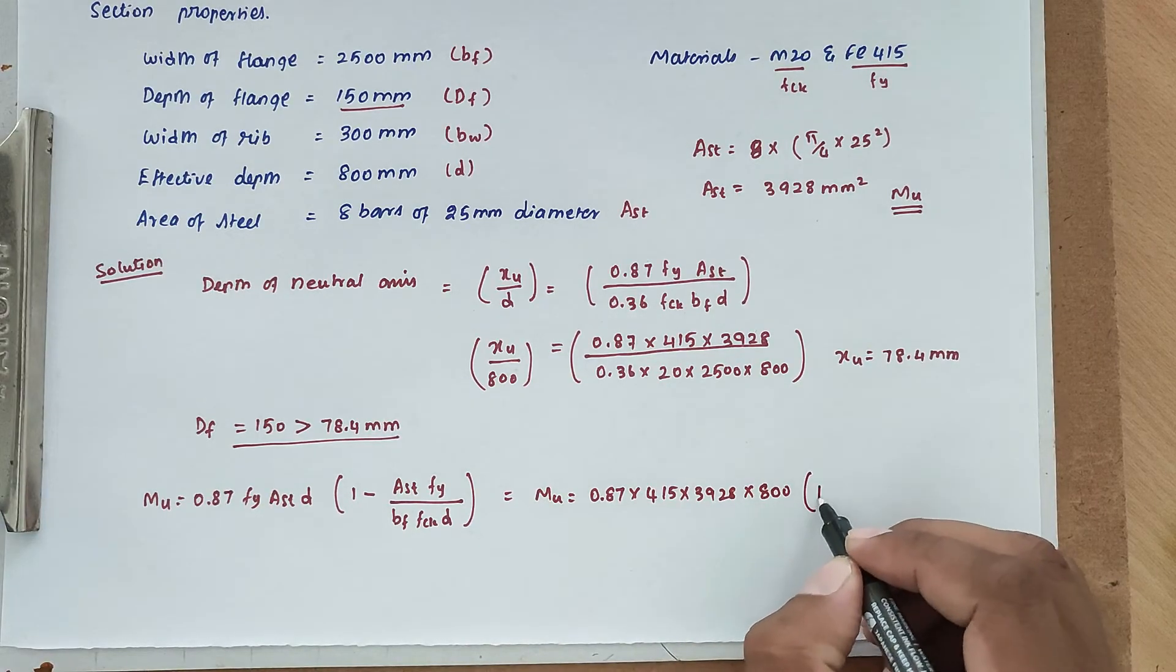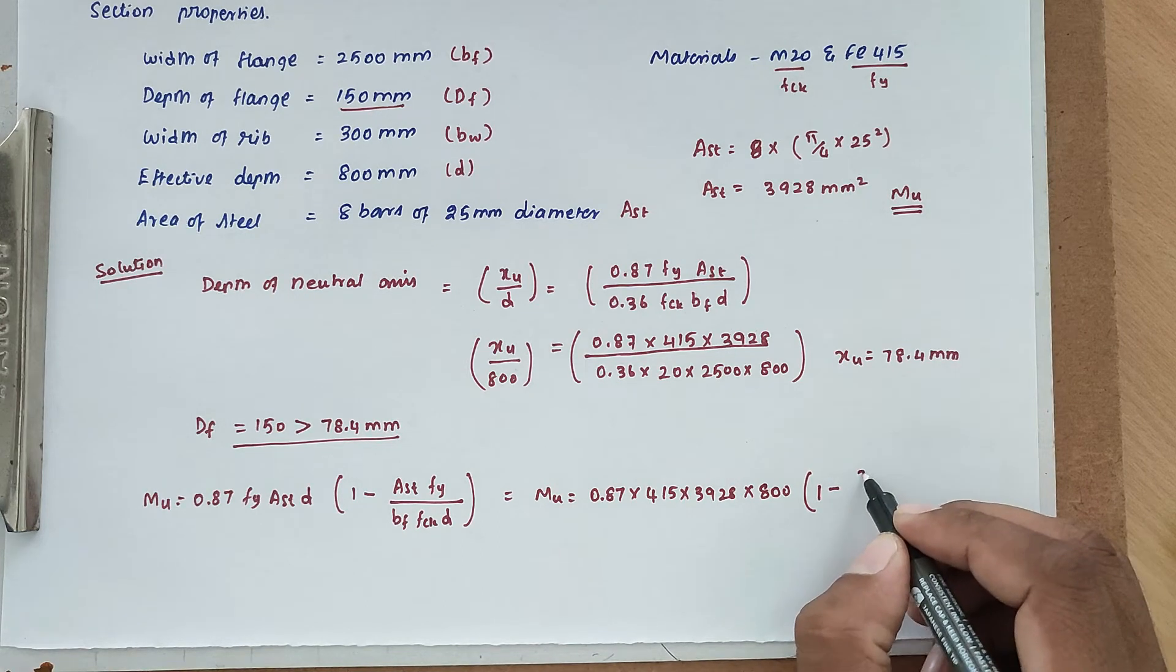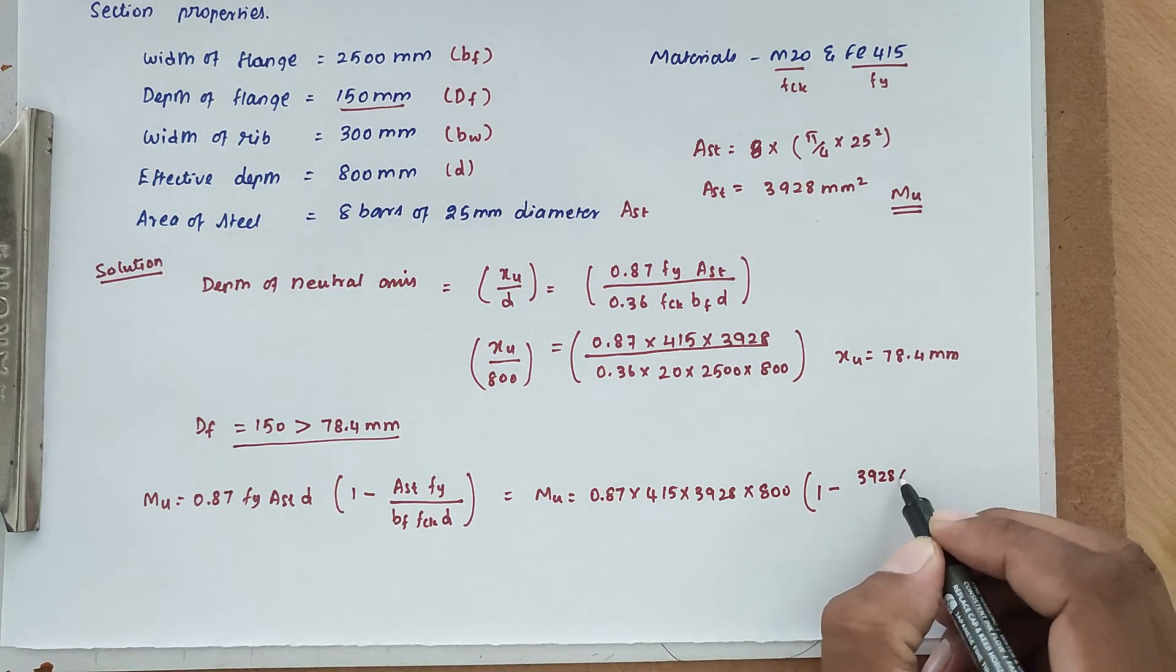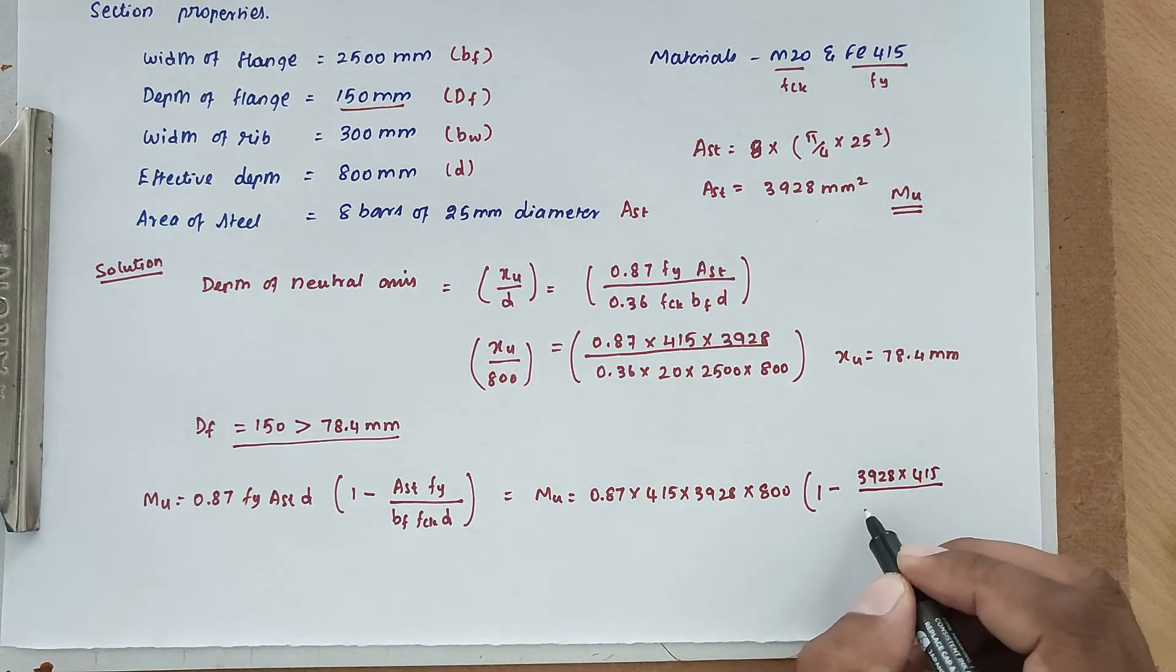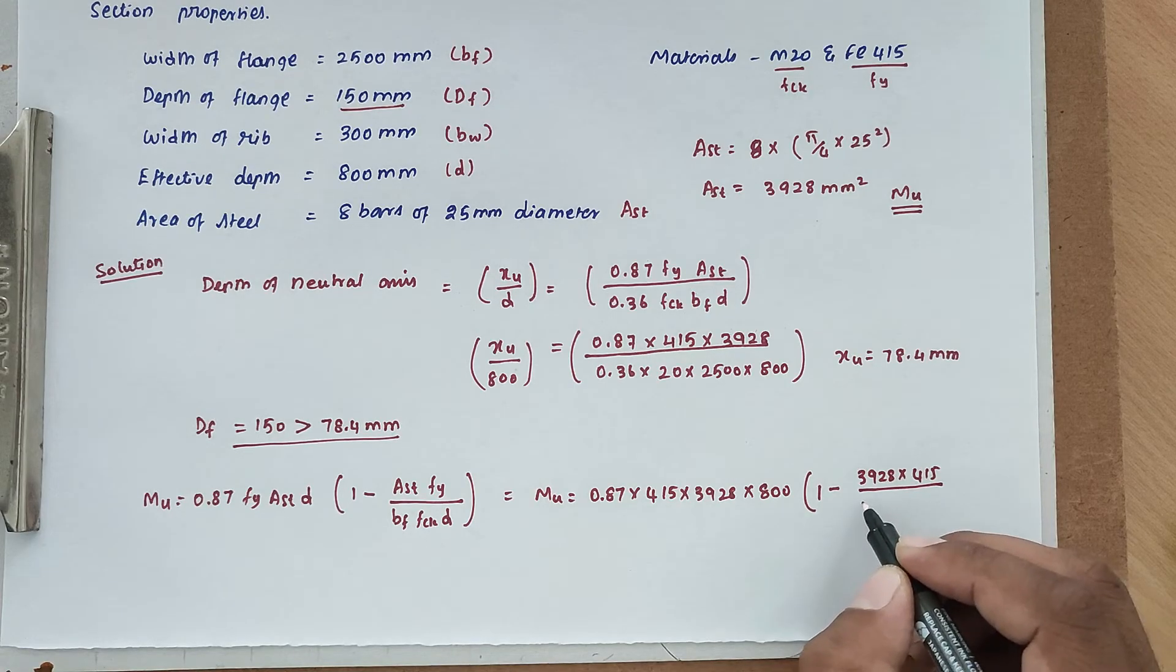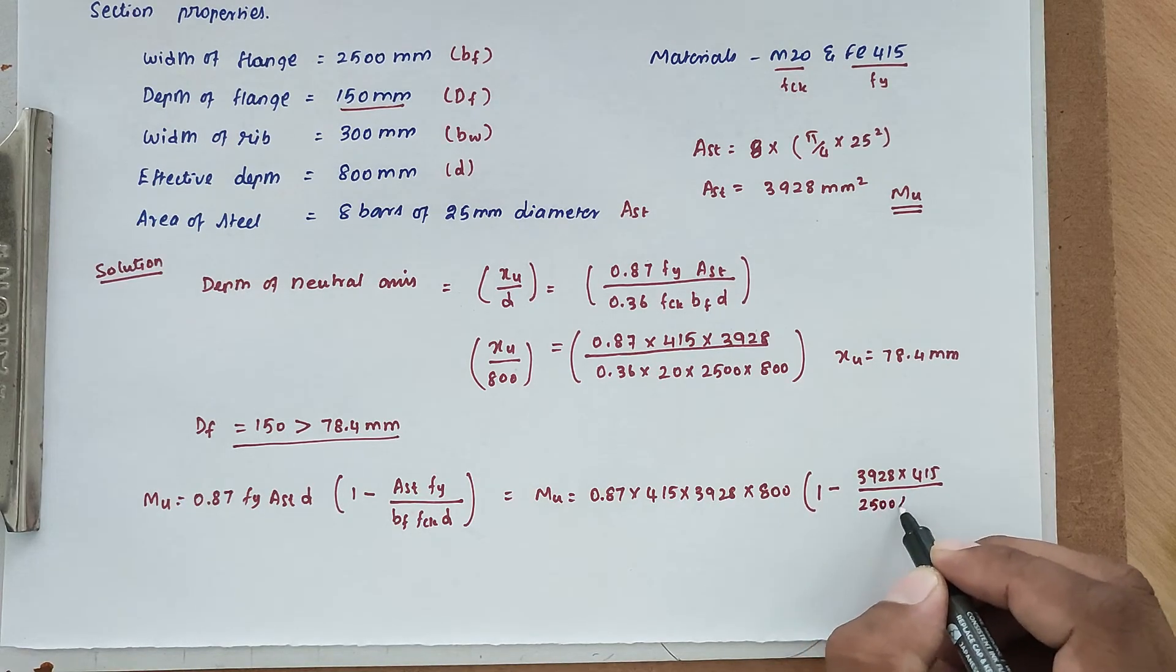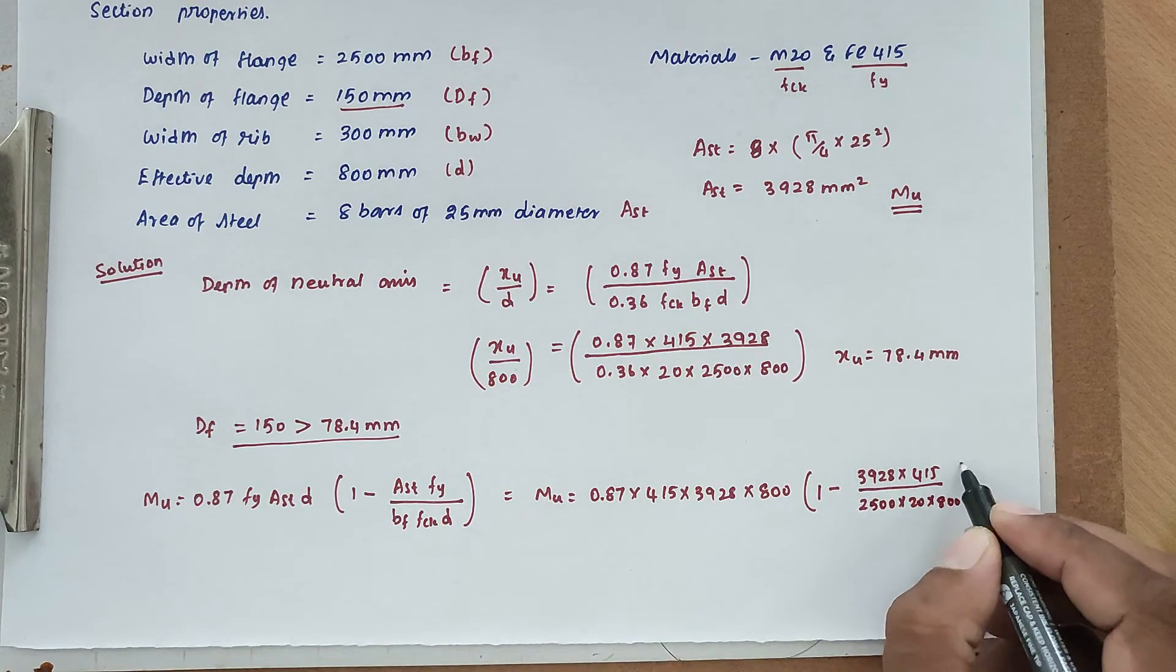After that we can substitute 1 minus AST value again 3928 into FY value 415 divided by BF width of flange 2500 into FCK 20 into depth 800.